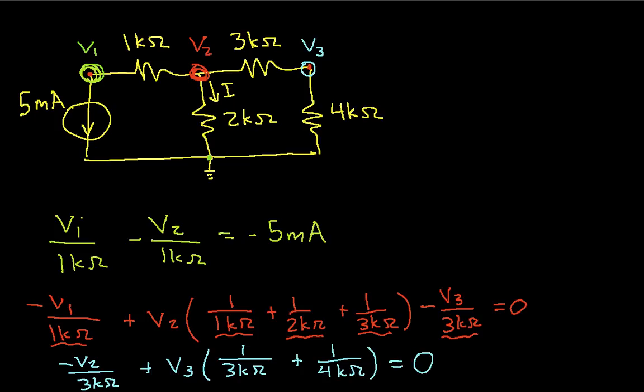The minus v2 over 3k ohms comes from the connection between node 3 and node 2 through the 3k ohm resistor. The v3 1 over 3k ohms comes again from that connection. And 1 over 4k ohms comes from the connection between node 3 and the reference node through the 4k ohm resistor. And this is set equal to 0 because there's no current sources that enter or leave the node.